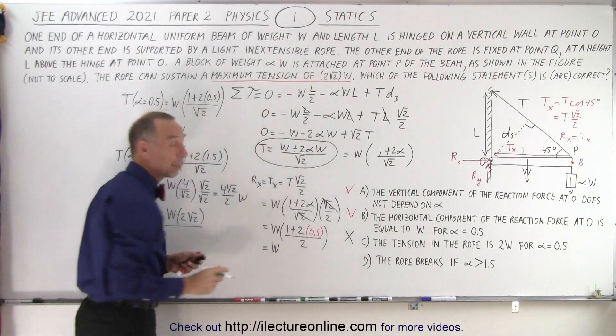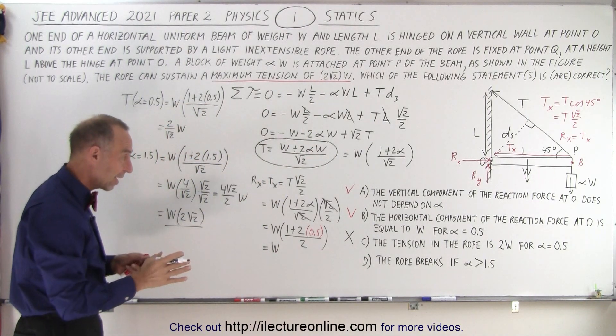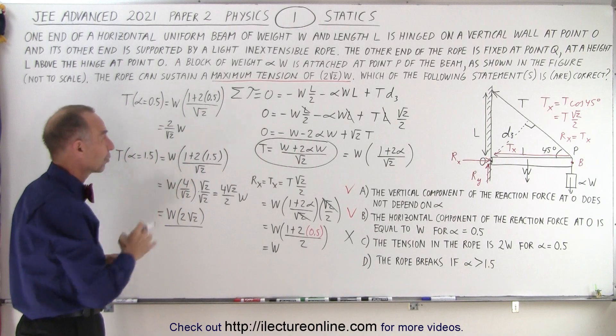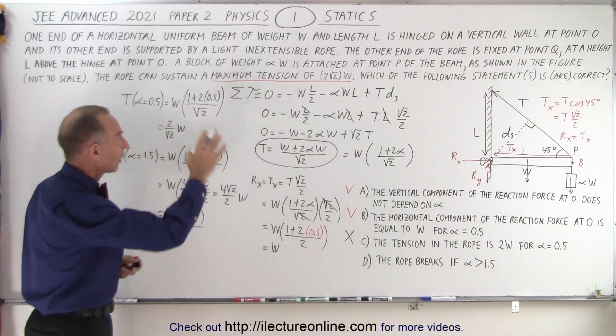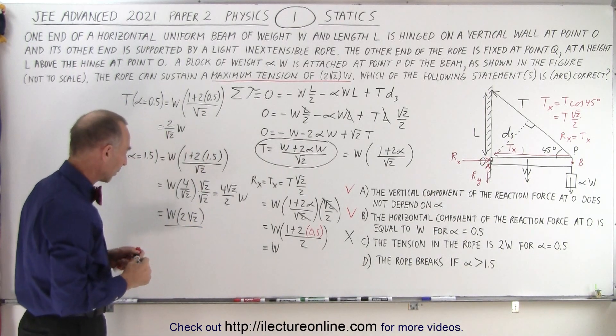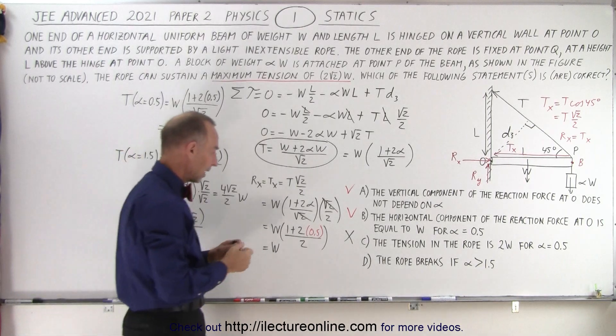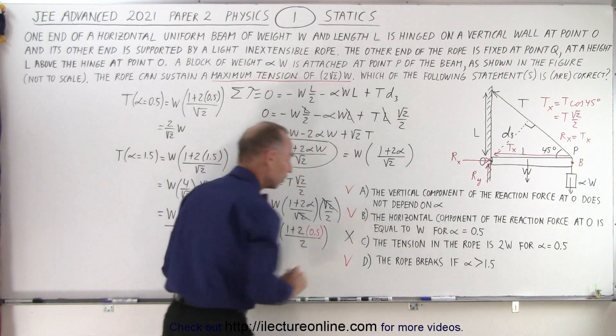Notice that is the limit at which the rope will break. So when we plug in alpha equals 1.5, we do reach the limit at which the rope will break. Anything bigger than that, the rope will not be able to withstand. Therefore, answer D is also correct.